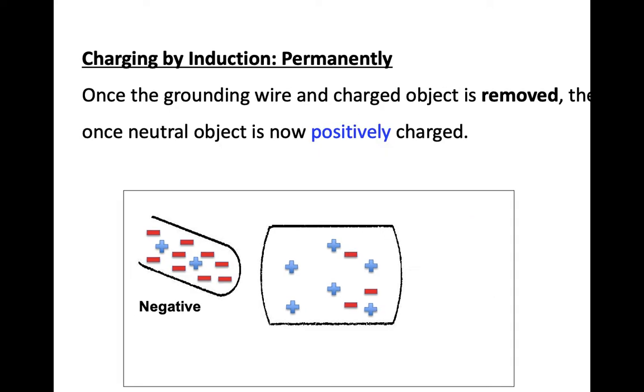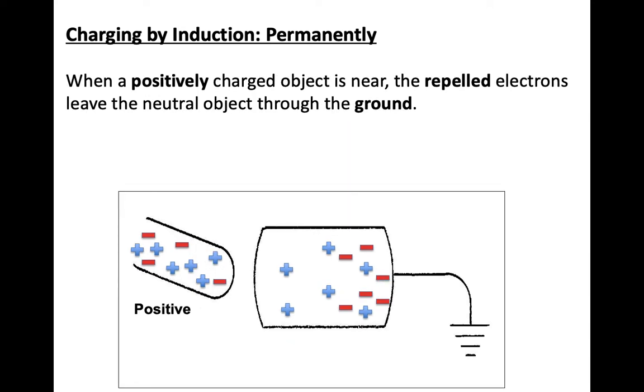Once the grounding wire and charged object is removed, the once neutral object is now positively charged. We have lost some electrons. So overall, this one is more positive.